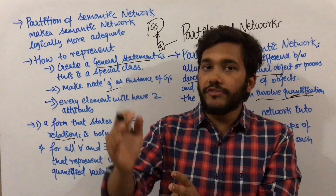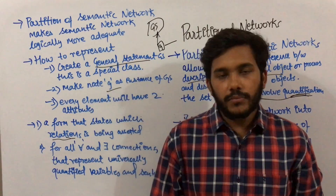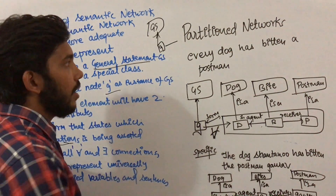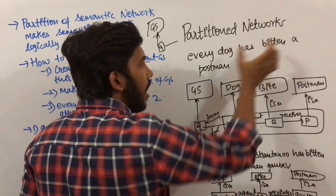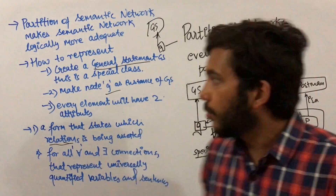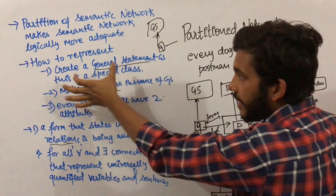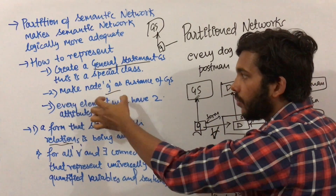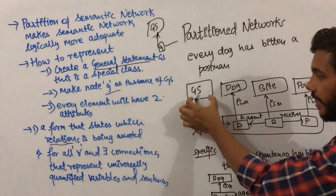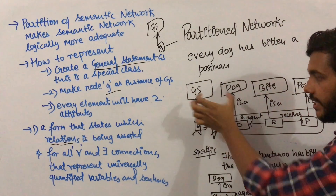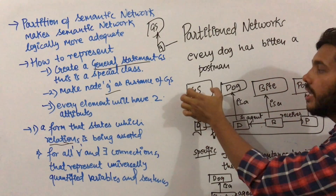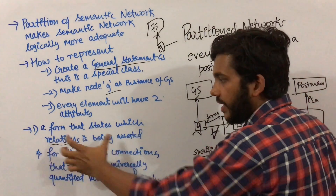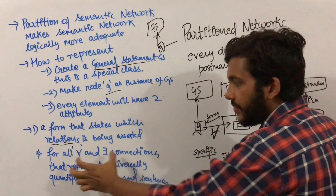For example, in the statement 'all dogs have bitten every postman', 'all dogs' uses the universal quantifier. Now coming to the example of partition network — the statement is 'every dog has bitten a postman'. First, we create a general statement GS, then make node G as an instance of GS. Every element will have two attributes: a form stating the relation, and a quantifier connection.